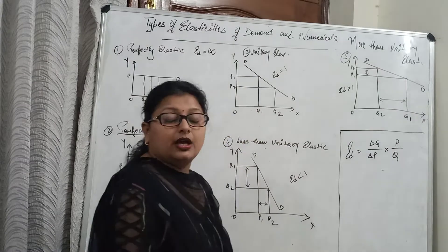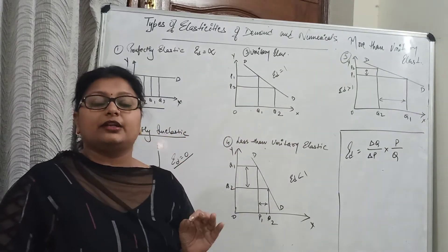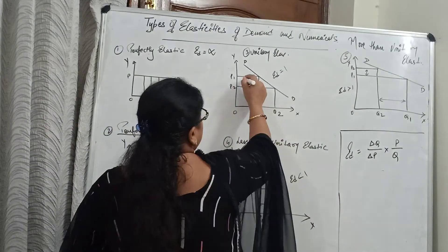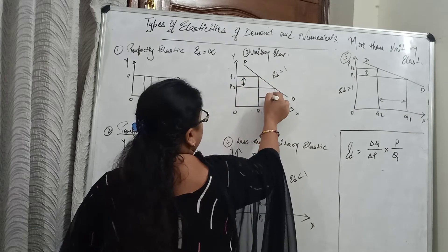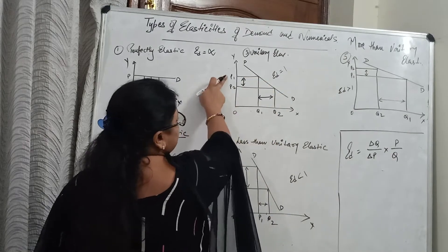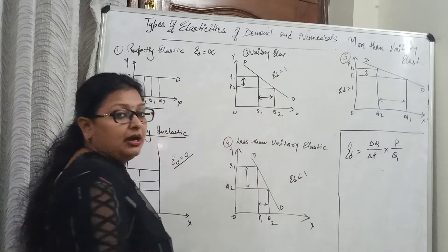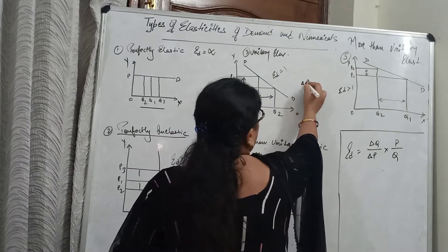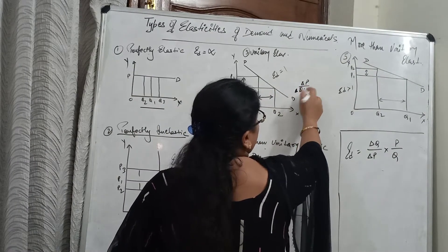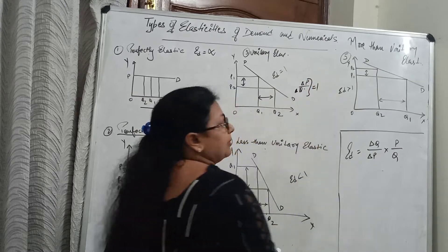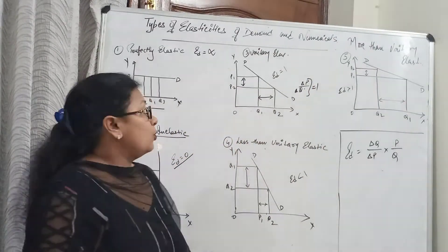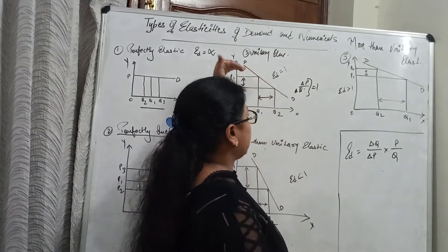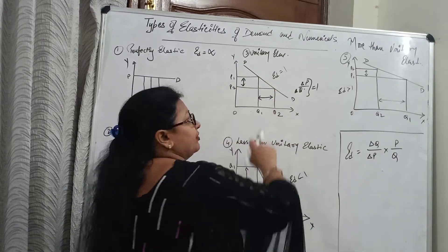Now let's go to some real cases. One is unitary elastic demand. Unitary elastic demand is that demand in which price changes cause a proportional change in the amount demanded. The proportion of change in price is equal to the proportion of change in demand. Here, elasticity is always equal to 1, because the proportional change in price equals the proportional change in demand. What you can see is that the change in price and change in quantity are in equal proportion.